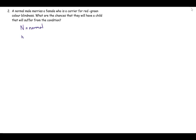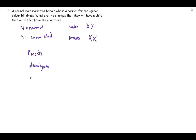A normal male marries a female who is a carrier for red-green colour blindness. We use big N for normal and little n for colour blind. Her genotype is X^N X^n (carrier female) and his is X^N Y (normal male). Working out their gametes and completing a Punnett square gives the offspring ratios — pause here to try it yourself.